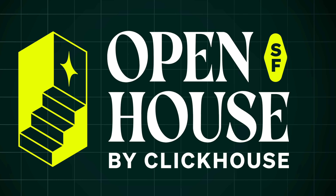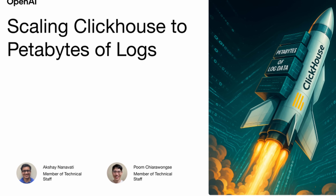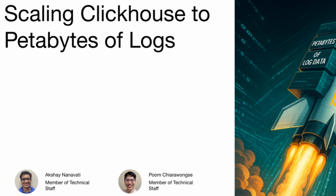Most of us aren't running at that scale, but the pain is the same. When you're diagnosing incidents, slow queries and endless data make it nearly impossible to see what's happening in your systems when it matters most. At the ClickHouse OpenHouse conference, OpenAI shared five reasons why they chose ClickHouse for their observability needs. In this video, I'll walk through those reasons and why they matter even if you're not running at petabyte scale. If you want the full details, there's also a blog post you can read in the description below.